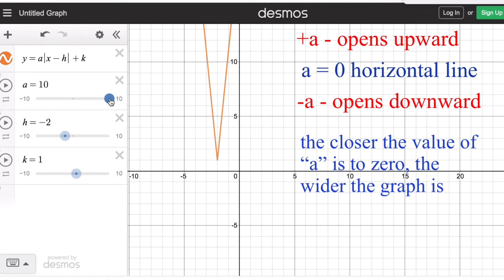This is the same for the other side. If we start from 10 and go all the way to zero, the graph becomes wider and wider up to the point that at zero it becomes a horizontal line.